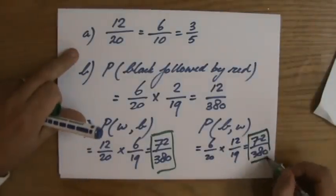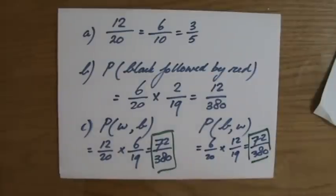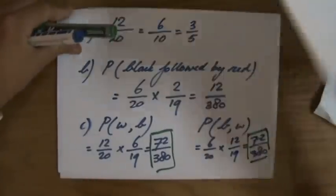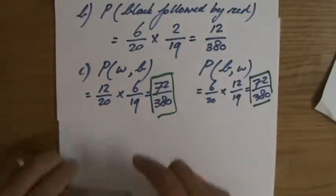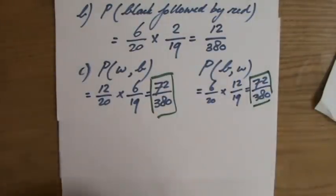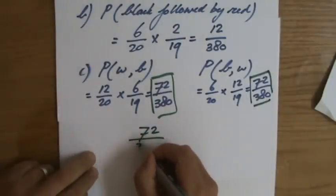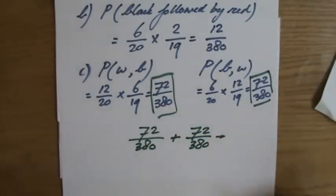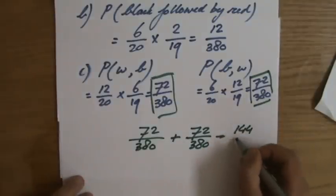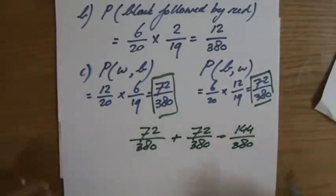So what is the chance now of getting a white and a black counter? And the order doesn't matter. Then you add these two. So if I will just continue here. I hope you can still see that on the video camera. This is one lottery ticket if you like. That's another one. I have two chances of getting a white and a black counter. So my final answer now is 72 over 380 plus 72 over 380. Or you times it by 2 if you like, which is 144. Did I say 360? It's 380. I apologize. It's 144 over 380.